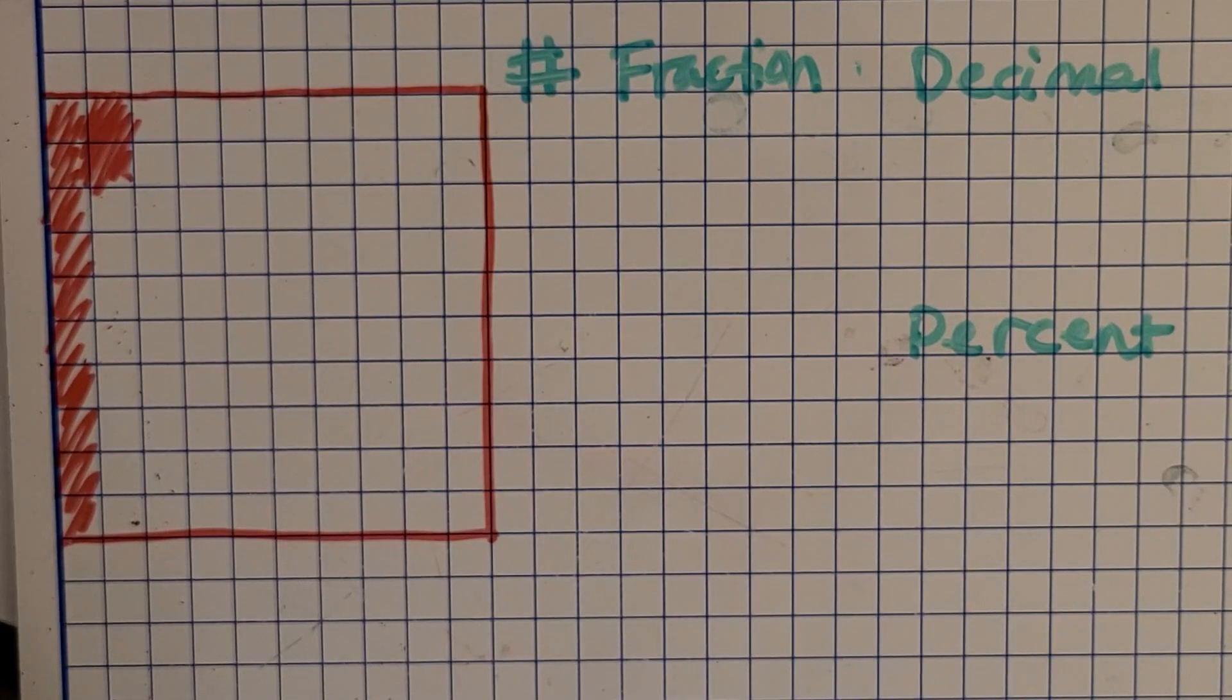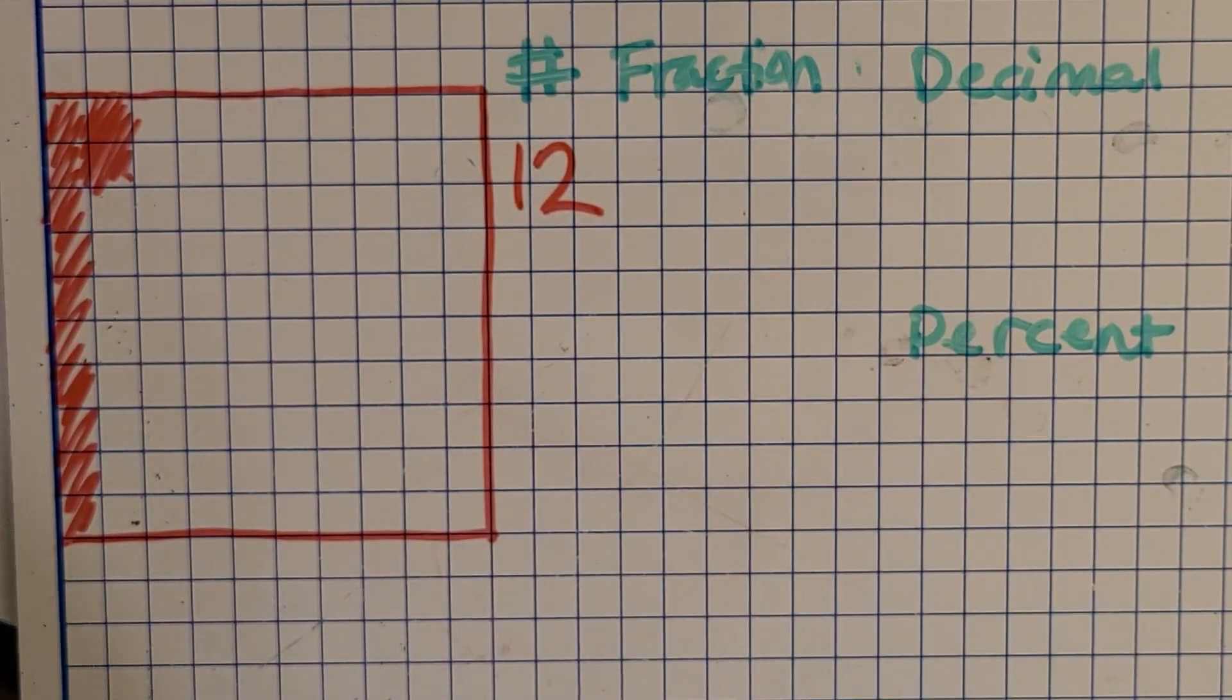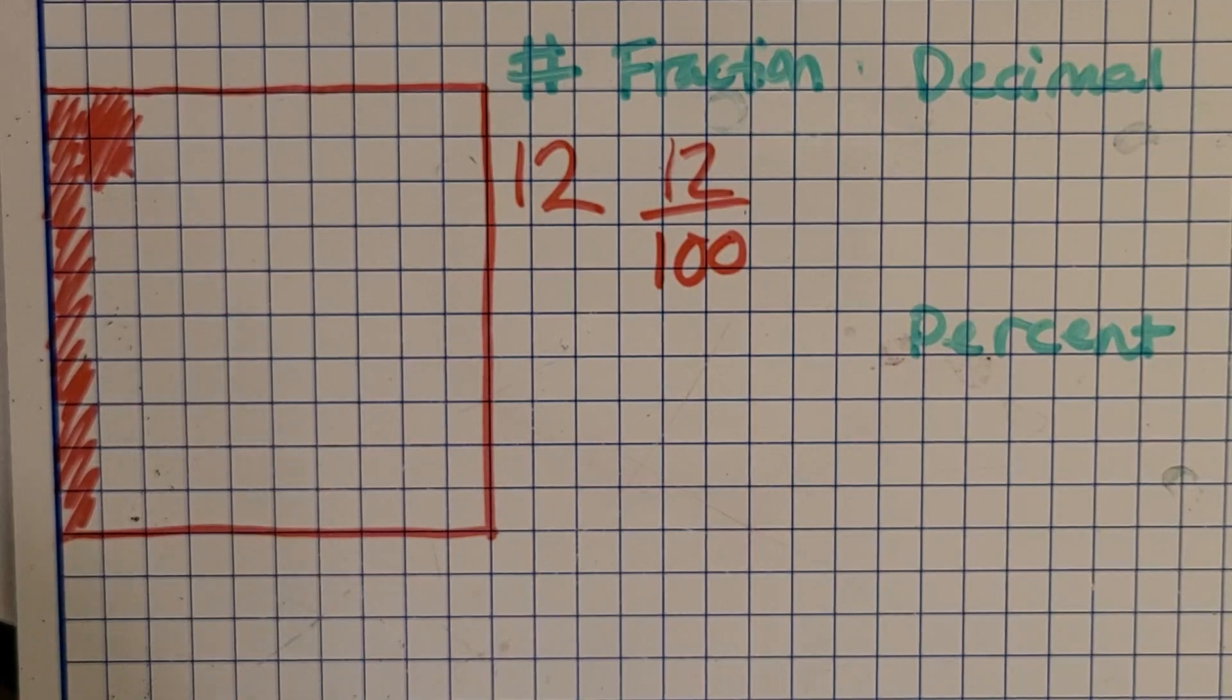So now I think we're ready to move over to the whiteboard and try some more examples. So here's our first example where I have shaded in something in the hundreds grid, and I want you to count the number of squares you see shaded. You're getting 12. And so what fraction does that make you think of? If I shaded in 12, yep, 12 hundredths or 12 out of 100.